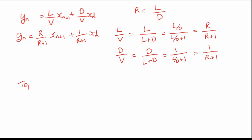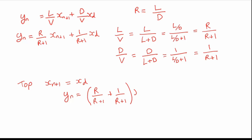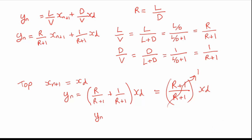At the top of our column, the final liquid phase composition equals the distillate composition. So at the top of the column, the enrichment section operating line gives R/(R+1)·X_D, which goes to 1, meaning the vapor composition also equals the liquid composition at the top. Therefore we know that the enrichment section operating line passes through the coordinates (X_D, X_D).